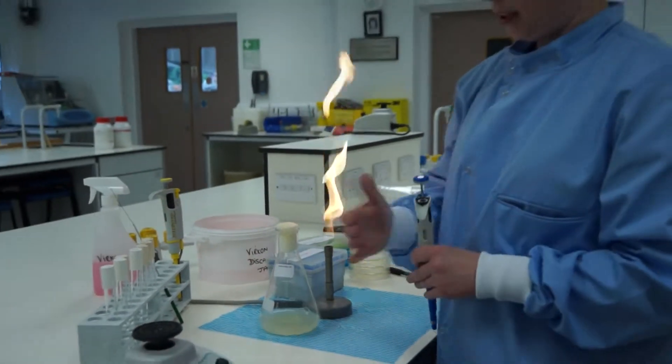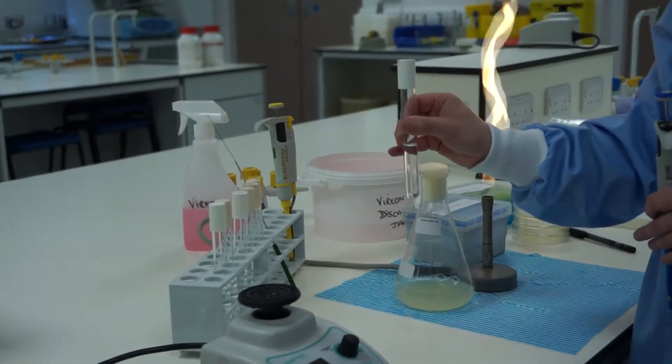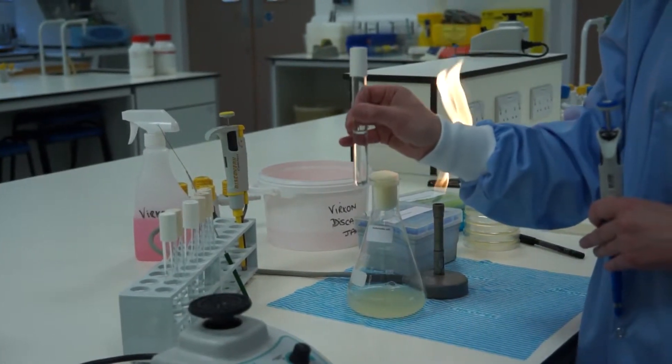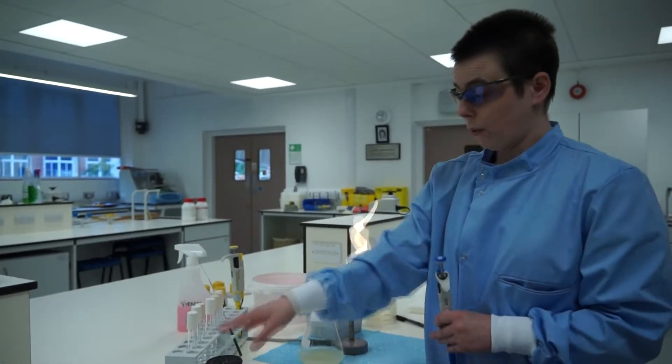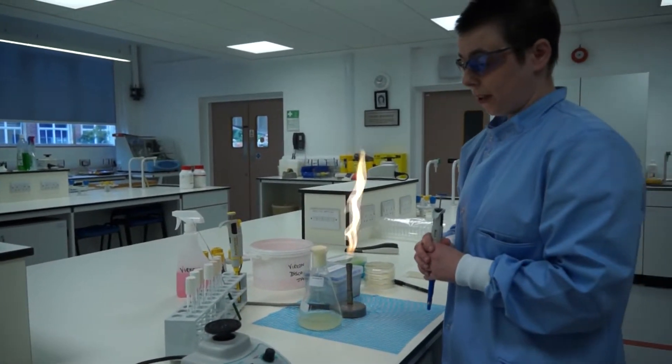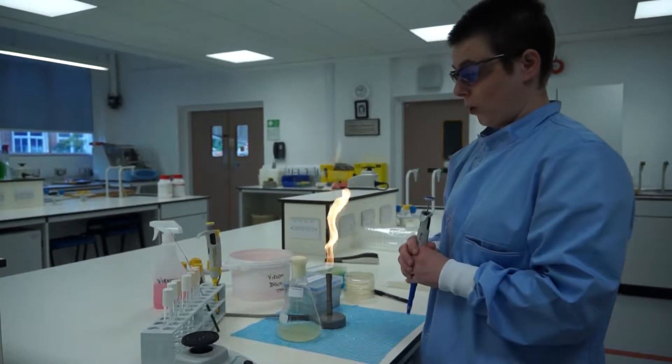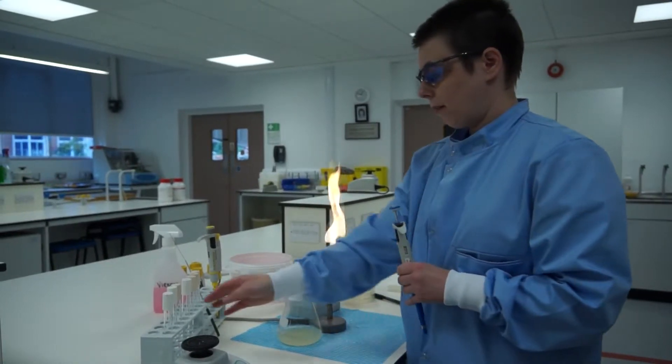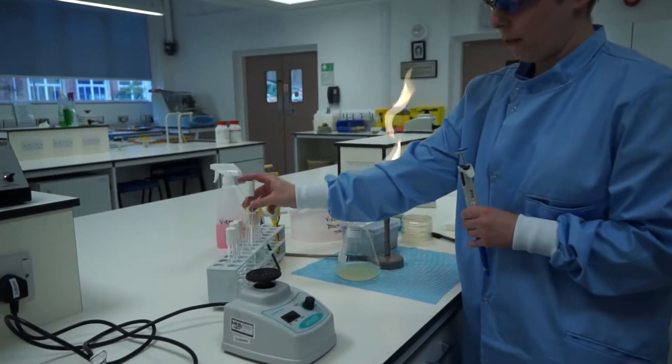The first step in the procedure is to label my tubes. I'm going to be doing 10 to the minus 7 dilutions, so I have 7 tubes and I've labelled them minus 1 to minus 7. We always label on the tube and not the cap, because tubes always go with the contents, whereas the caps can be switched. Also the tubes will wash clean when they're reused. The caps retain previous markings which can cause confusion if you're marking on the caps.